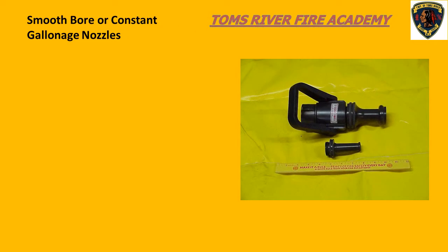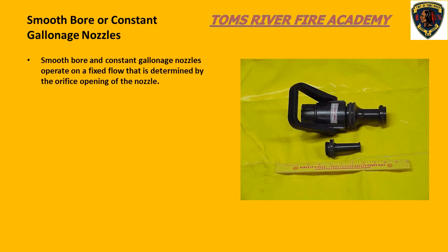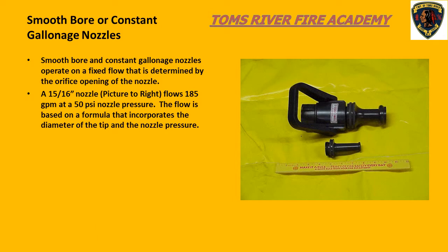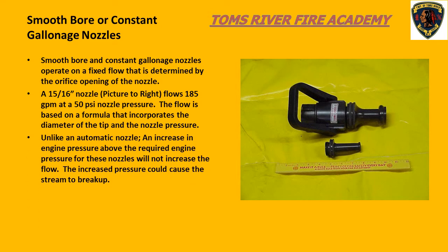Smooth bore or fixed gallonage nozzles work on a fixed flow determined by the tip size or orifice opening of the nozzle. The 15/16-inch nozzle flows 185 gallons a minute with a nozzle pressure of 50 psi. The flow is based on a mathematical formula using the tip diameter and the nozzle pressure. Unlike an automatic nozzle, an increase in engine pressure above the required level will not increase the flow — it will more than likely disrupt the shape of the stream and cause it to break up.